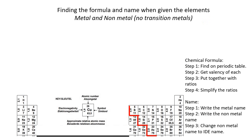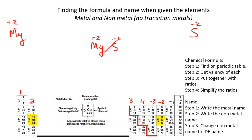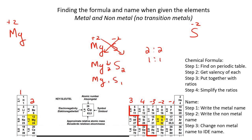Let's do magnesium and S — Mg and S. Step one: find them on the periodic table. Step two: get the valency — Mg is positive two, and S is negative two. Put them next to each other and cross the numbers, giving Mg₂S₂. But this can simplify: two to two simplifies to one to one, so it becomes MgS — you leave out the ones.